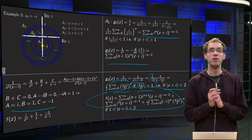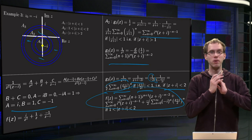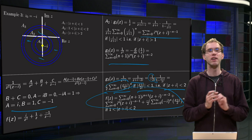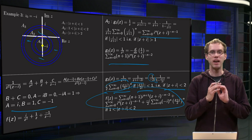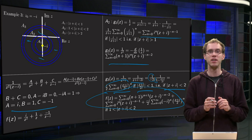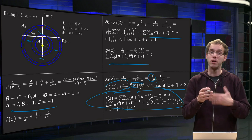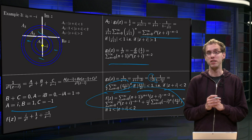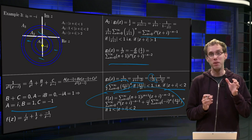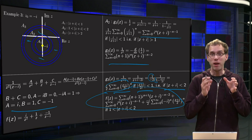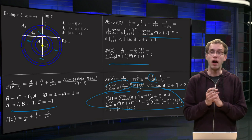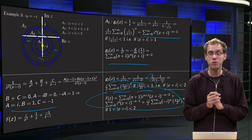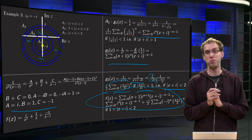Now you can find any Laurent series of this type around any point in any annulus. You see that we always use the same types of tricks — but always remember in which region you are, as that determines how you apply the geometric series.